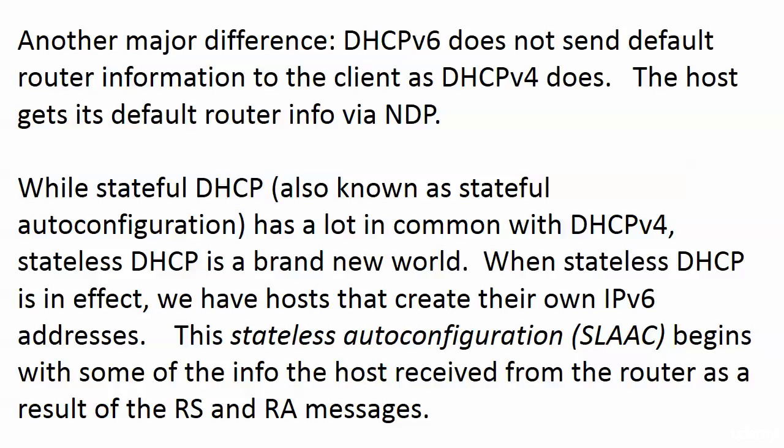One more big difference: DHCP version 6 does not send default router information to the client the way DHCP version 4 does. The host gets that default routing information via NDP — Neighbor Discovery Protocol — through the router solicitation and router advertisement messages discussed earlier.